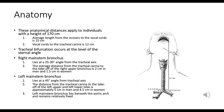The left main stem bronchus lies at a 45-degree angle from the tracheal axis. The distance from the carina to the takeoff points of the upper and left lower lobe bronchus is about 5 centimeters in men and 4.5 centimeters in women. The left main stem bronchus lies beneath the aortic arch, which keeps it relatively fixed in position.